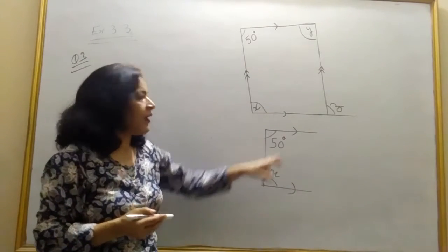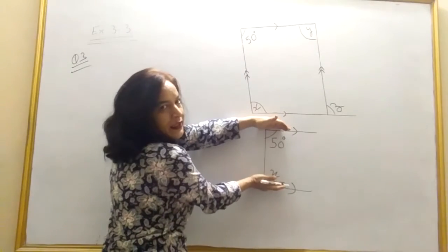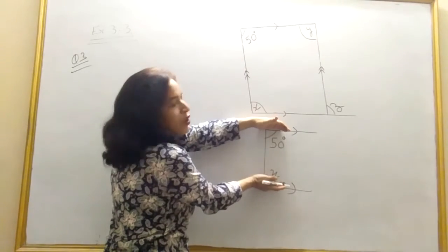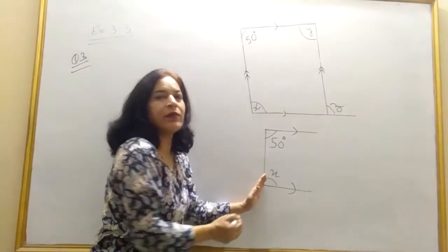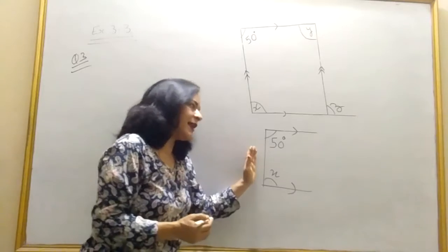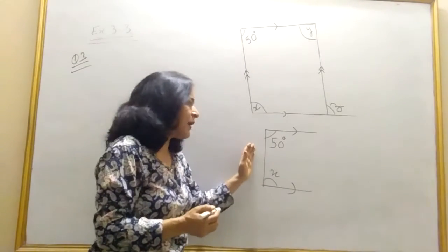Co-interior angle why? This line is parallel to this and both are in the interior of the parallel lines. So called co-interior angle or you can say adjacent angle on the same arm. They are supplementary.